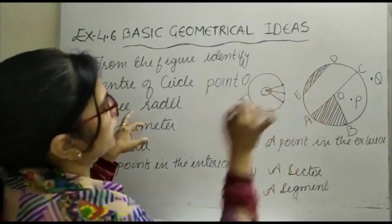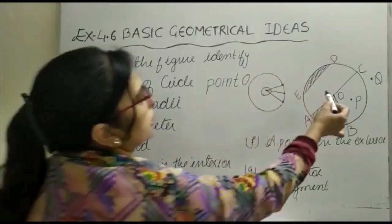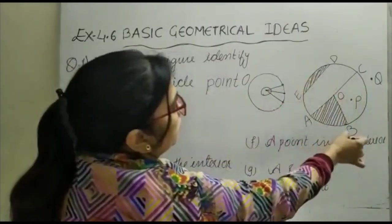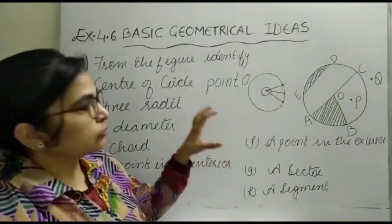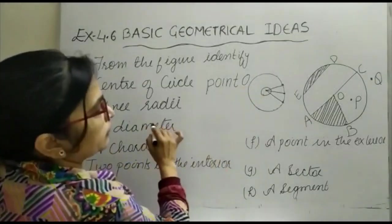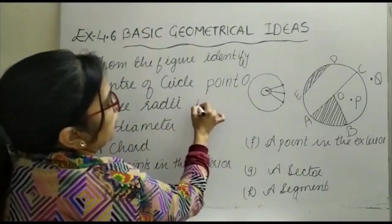If you check here, the radii will be OA, OB, and OC, because A, B, and C are points on the circumference which are joined to the center.